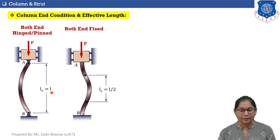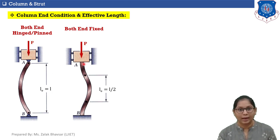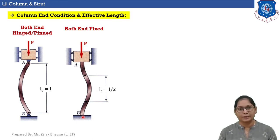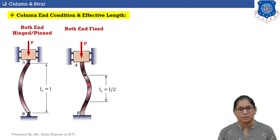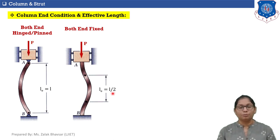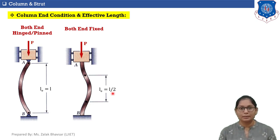Case 2: both ends of the column are fixed. End A and end B are both fixed. The column is subjected to axial load P, and because of the load only the middle portion of the column gets deflected. In this case the effective length equals the original length divided by 2, so L_e equals L/2.